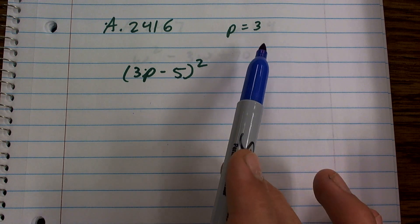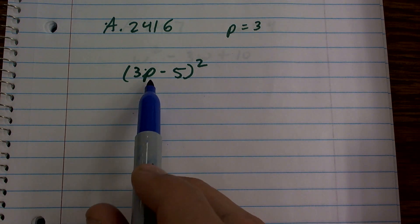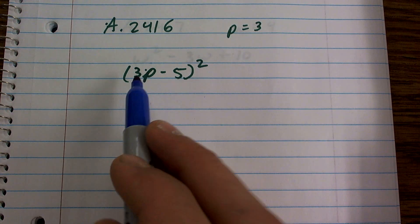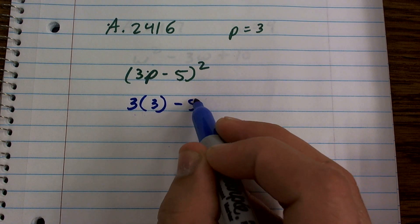All right, I want to evaluate this expression, p equals 3. So 3 goes in for the value of p. All I'm simply going to do is plug in my 3 for this value. So I have 3 times 3 minus 5.